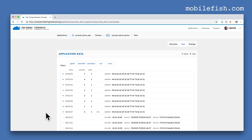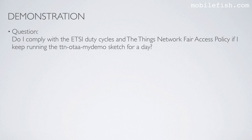At this moment my gateway is up and running and my end device is only 8 meters away from my gateway. Here is an interesting question: do I comply with the ETSI duty cycles and the Things Network Fair Access policy if I keep running the TTN OTA My Demo sketch for a day? This question will be answered in the next video.